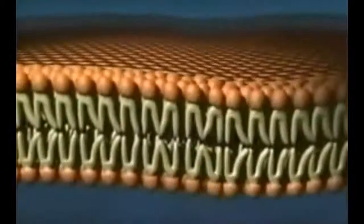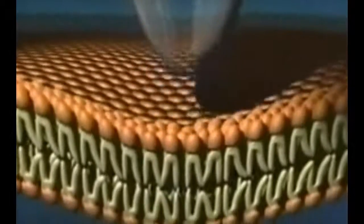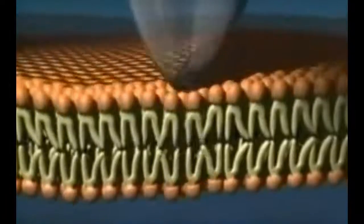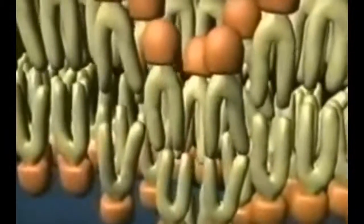Between the living machinery of the inner cell and the harsh conditions of the outside world stands the cell's plasma membrane. As crucial as this barrier is, it's surprisingly flexible. Push it, push it, and watch it move. Poke hard enough, and it might break and begin to regroup.